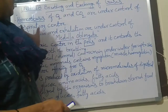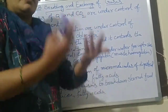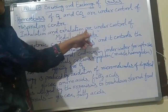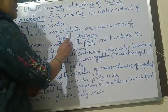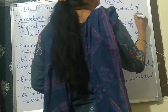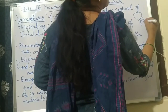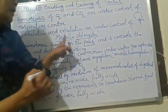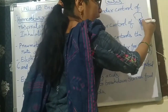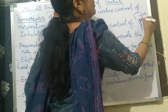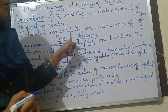Inhalation means breathing in and exhalation means breathing out. Inhalation and exhalation are under the control of the medulla oblongata, which is present in the brain stem. The brain contains the brain stem, and the first part of the brain stem is called the medulla oblongata.